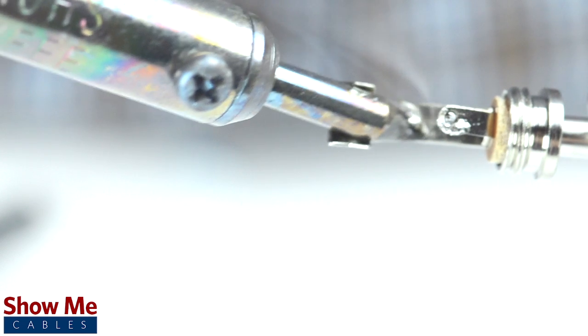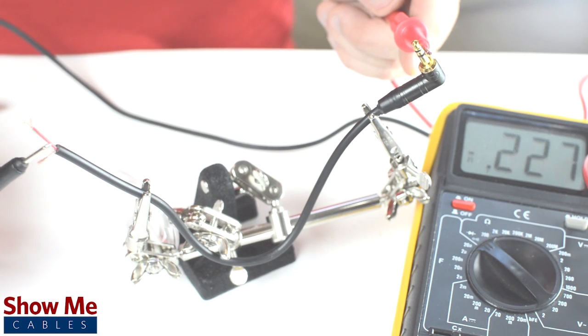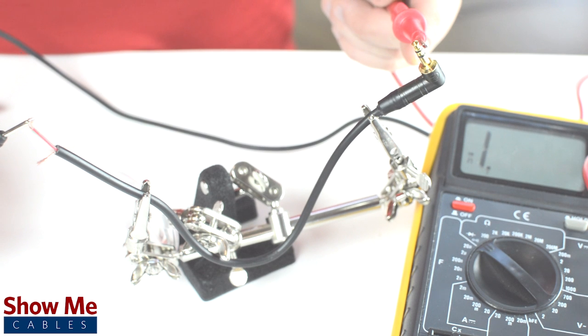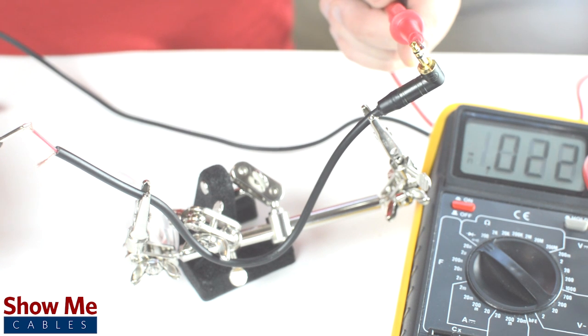The sleeve is the longest piece of metal coming out of the back of the connector. If you are unsure of which solder point corresponds to the tip or sleeve, you can use a multimeter to check continuity.